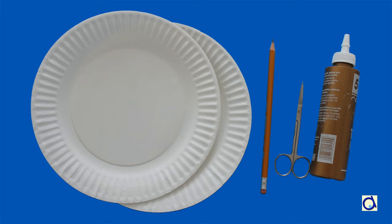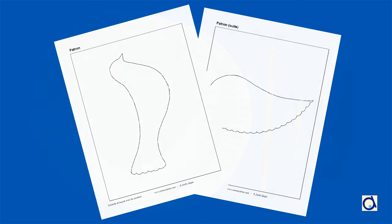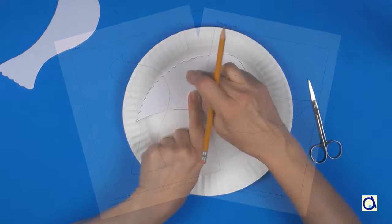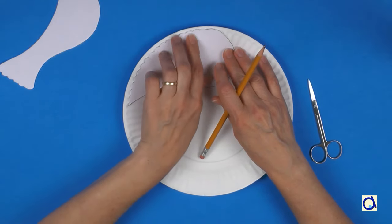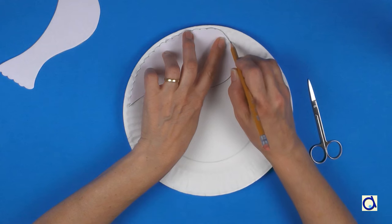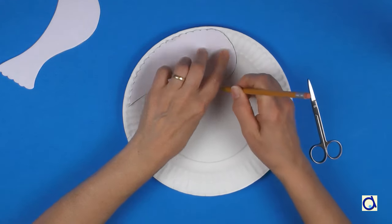To help you create this dove, take the patterns from the printable document. Place the pattern of the wing so that the end of the feathers matches the edge of the plate. Trace around the pattern on the paper plate with a pencil.